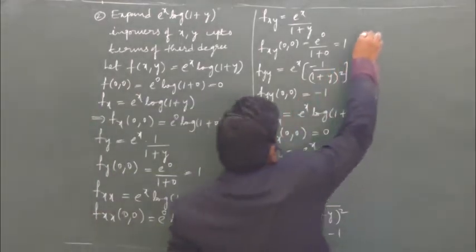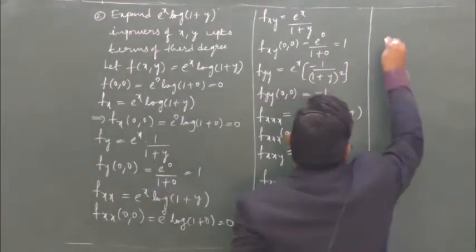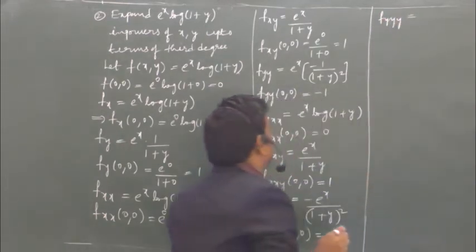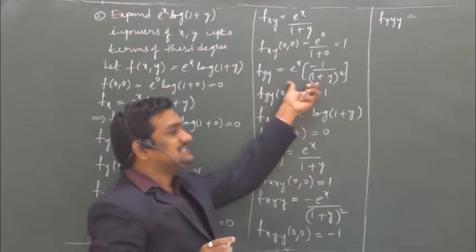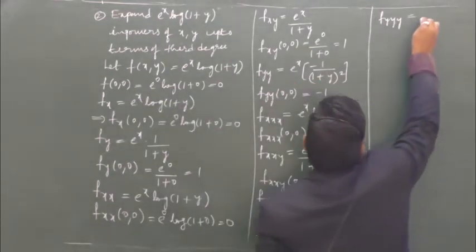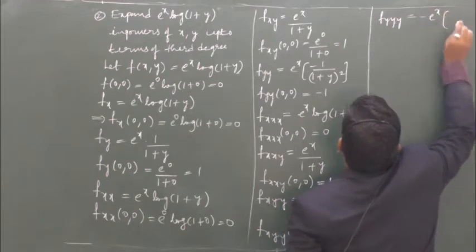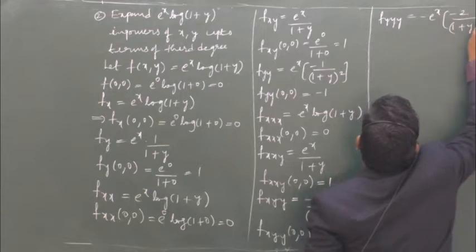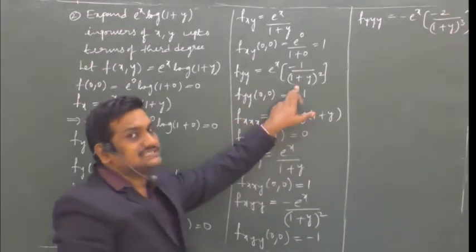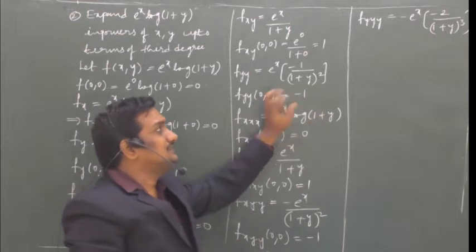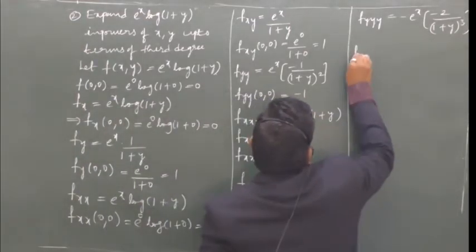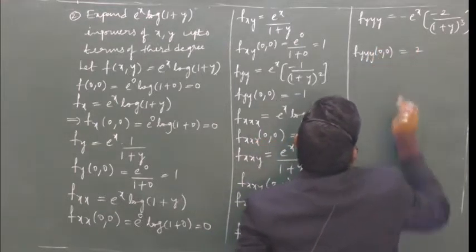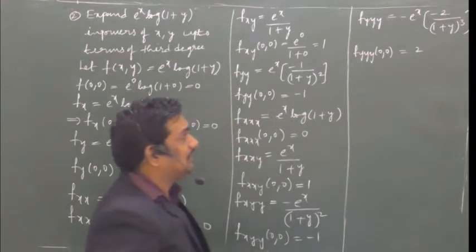The last term involves y³ · fyyy at (0,0). fyyy is the derivative of fyy with respect to y. fyy = -e^x/(1+y)², so its derivative is 2e^x/(1+y)³, since the derivative of 1/x² is -2/x³ with internal derivative 1. Evaluating at (0,0): 2/(1+0)³ = 2.